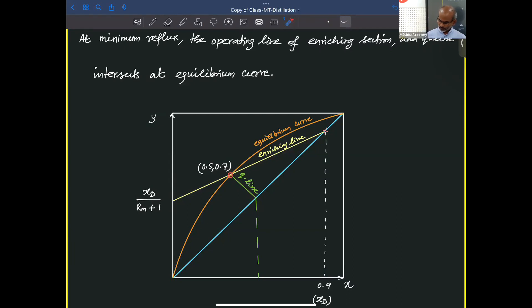For any other reflux, the Q line will pass below that. With increase in reflux, the intercept value will be going down. At minimum reflux, we have this intersection. The enriching line is cutting this Q line at the equilibrium curve.